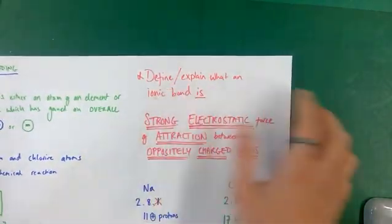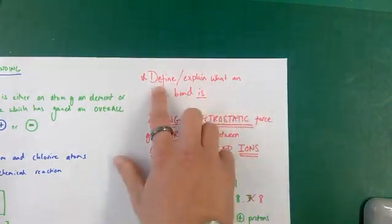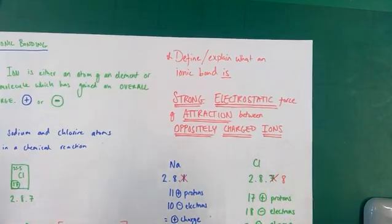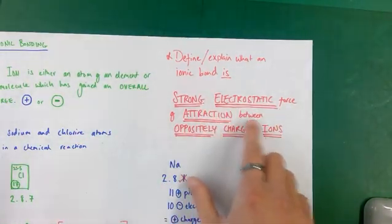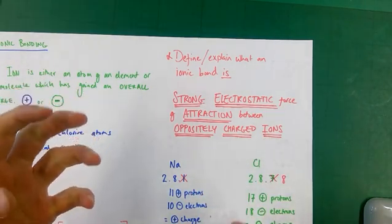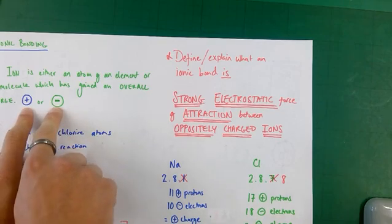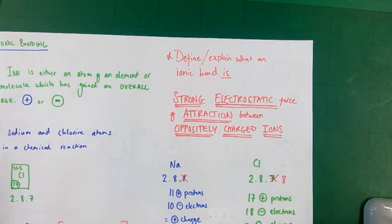The question of what an ionic bond is is a separate question. An ionic bond is the strong electrostatic force of attraction between the oppositely charged ions. As soon as that positive ion is near that negative ion, a strong electrostatic force of attraction comes into being and pulls those ions together, forming a new compound as a result.